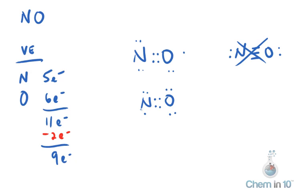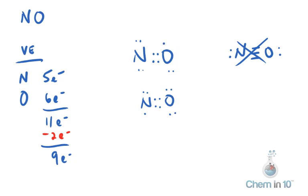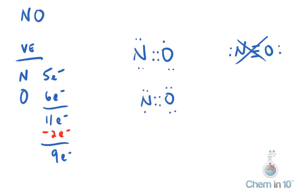So let's calculate formal charge and see which one is correct. Let's put that there closer. This will be A and this will be B.